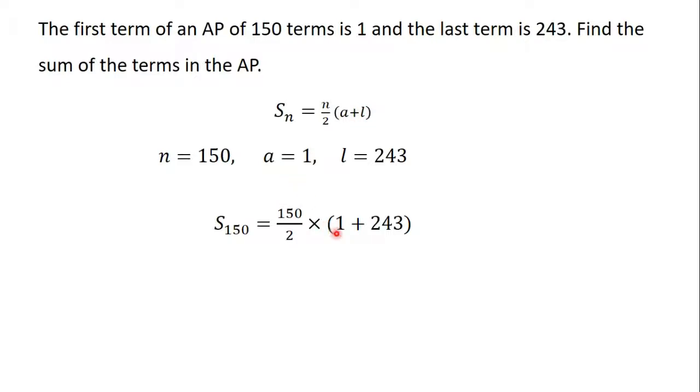We have a plus l, where a is 1 and l is 243. So we have 1 + 243. 150 divided by 2 will give us 75.